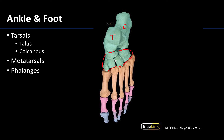There are five metatarsals numbered one through five from medial to lateral, shaded in orange. The first metatarsal is medial and associated with the great toe. The phalanges include proximal phalanges shaded in pink, middle or intermediate phalanges in light purple — note there is no middle phalange for the first digit — and distal phalanges in light blue. The more lateral distal phalanges become quite small and not particularly well developed.